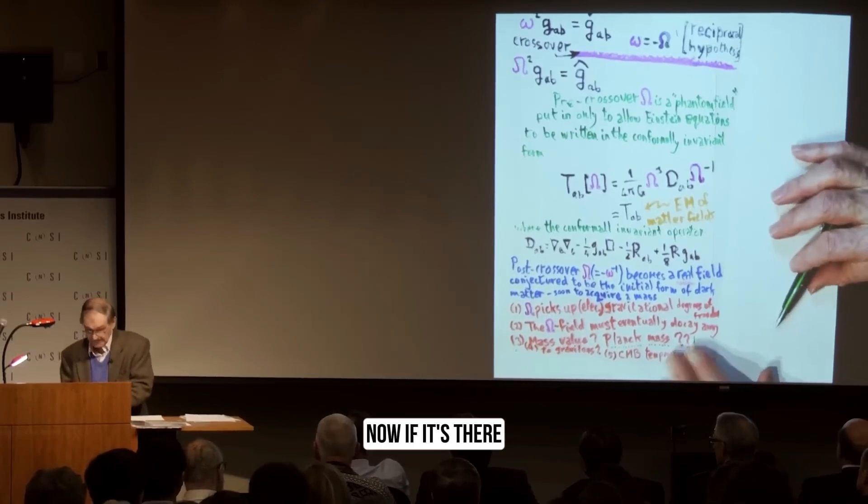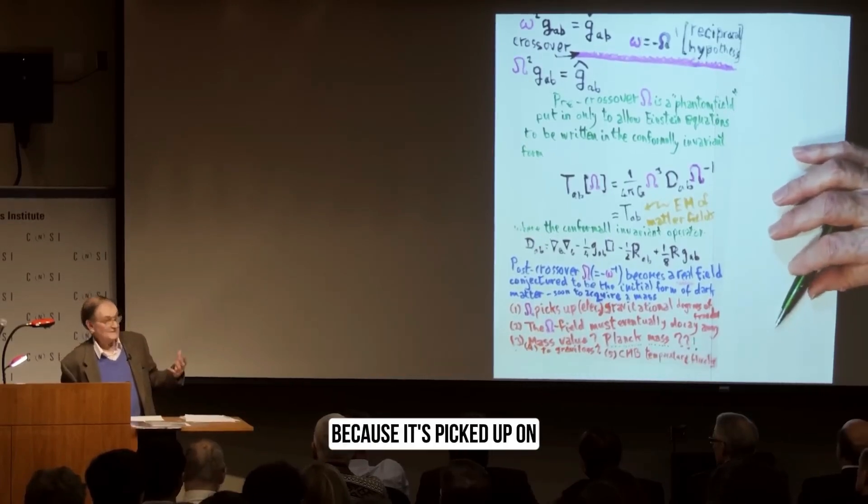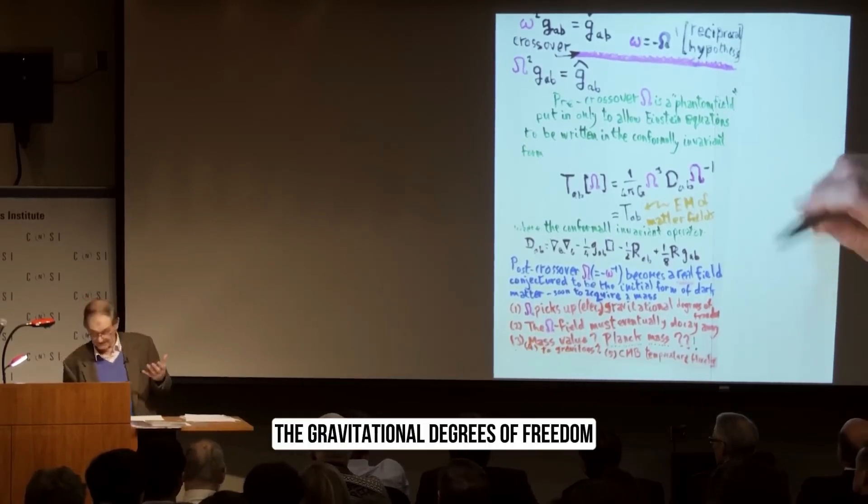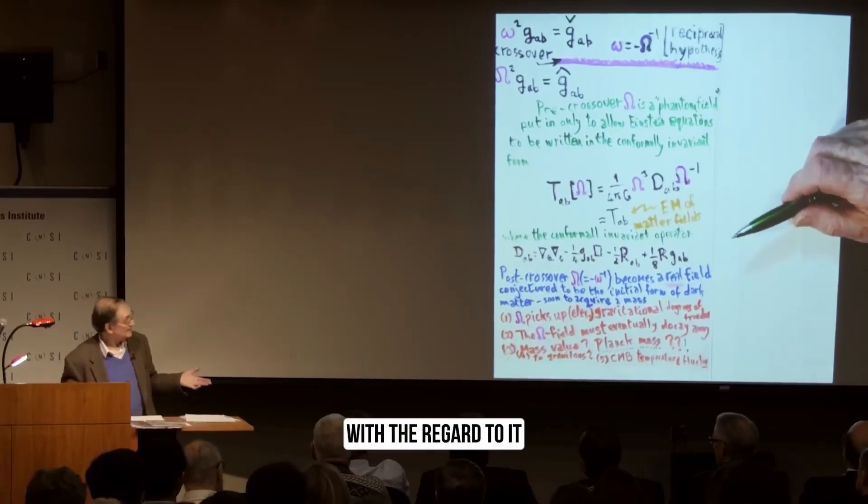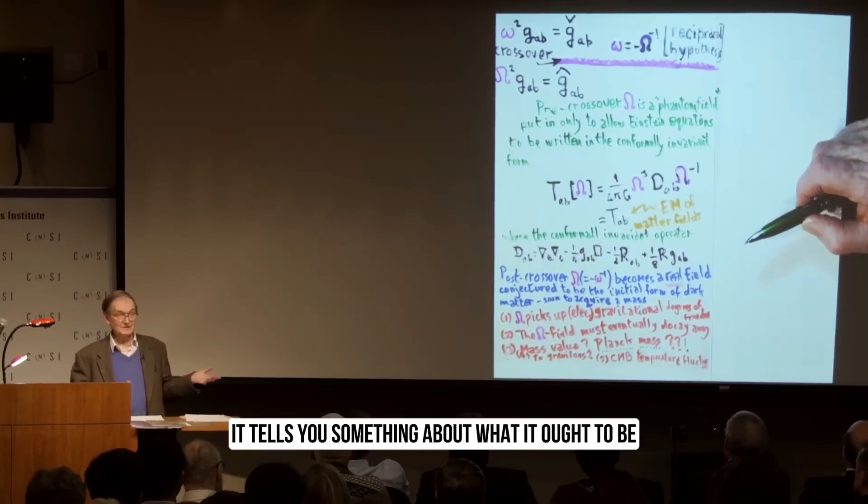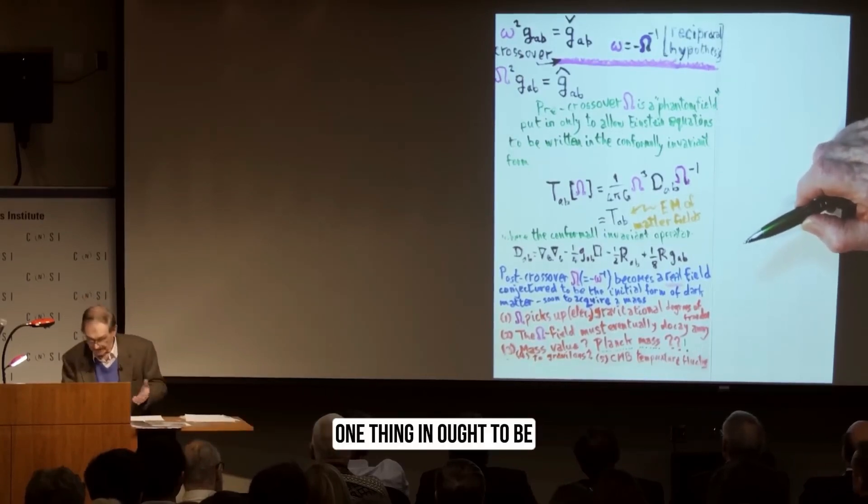Now if it's there, and if it's really gravity, because it's picked up on the gravitational degrees of freedom, there's nothing else in physics going on with regard to it. It tells you something about what it ought to be.